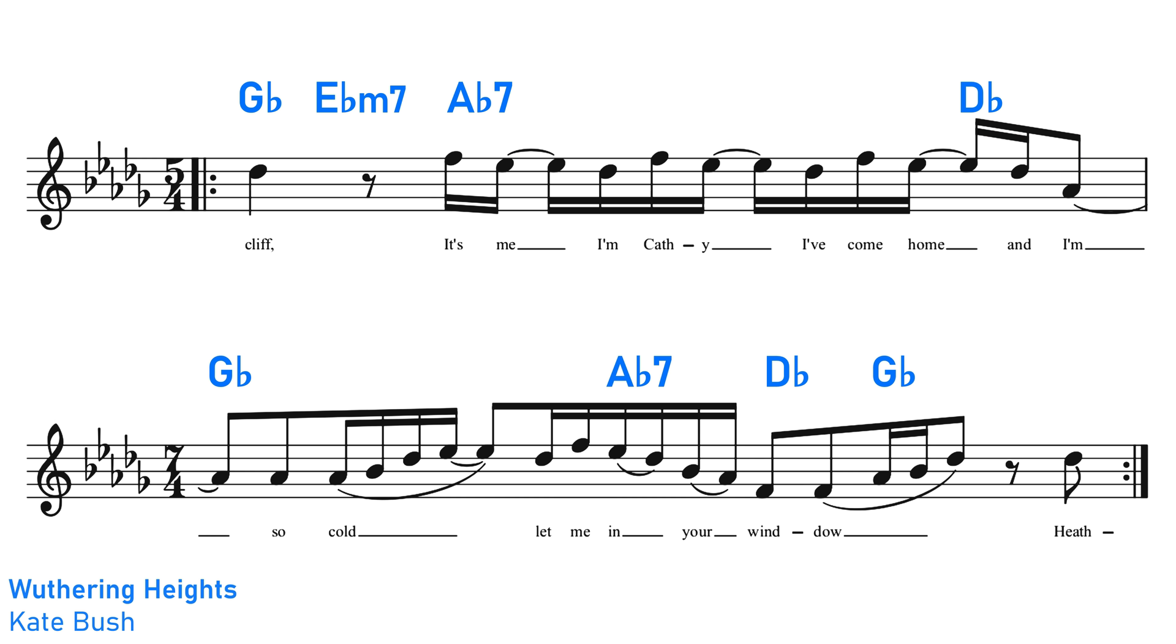And that leads us on to the chorus, where we stay in that key of B-flat minor, and get a similar chord progression in this time of G-flat and A-flat seven, the A-flat seven then resolving us to D-flat, and then G-flat.